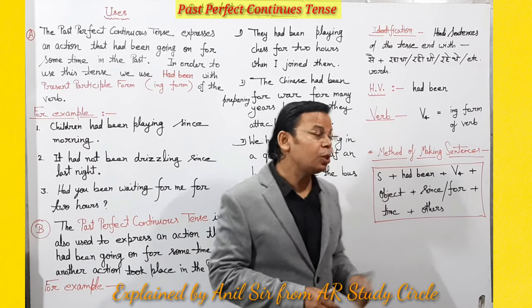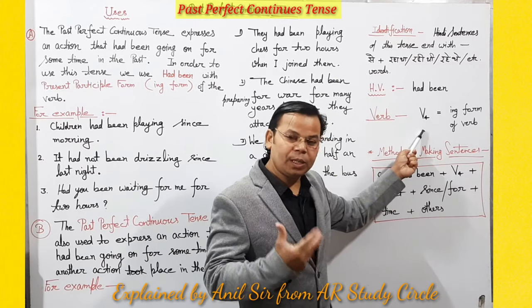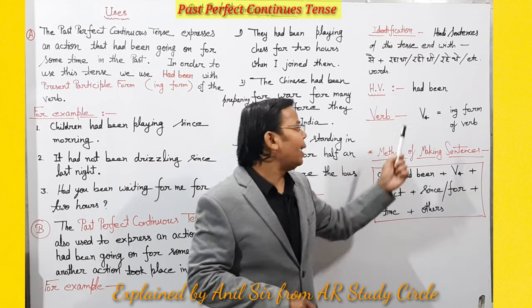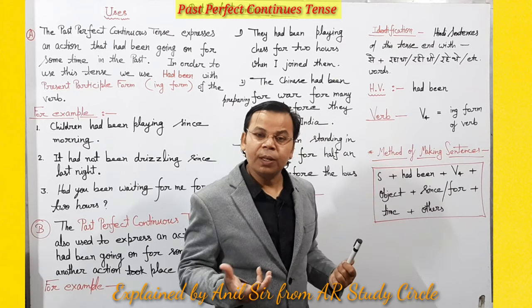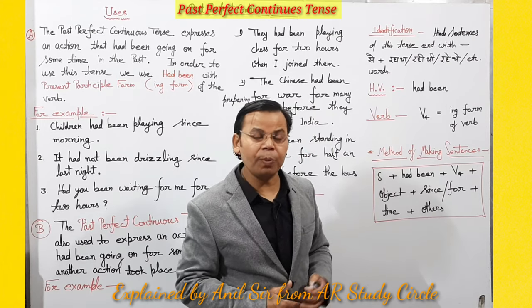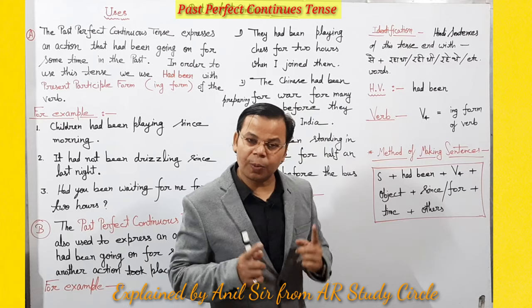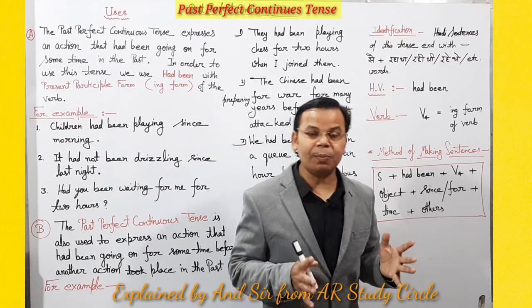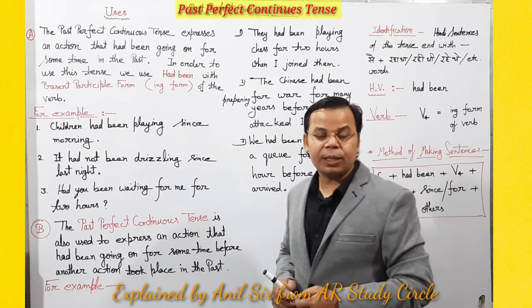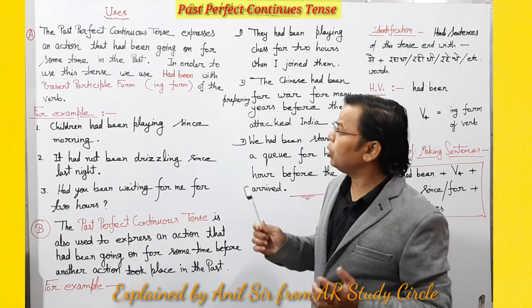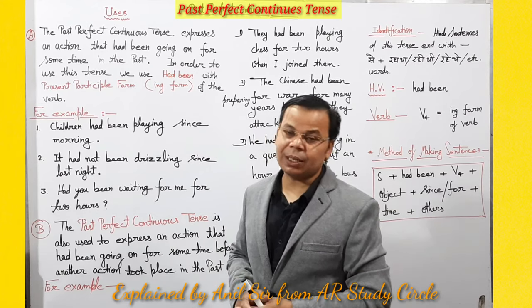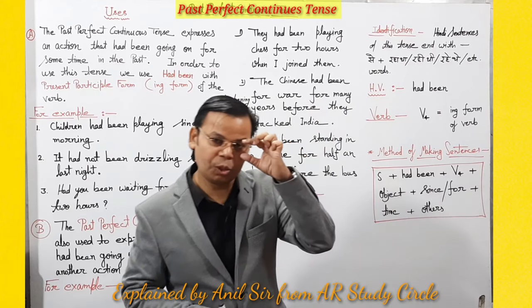In Past Perfect Continuous Tense, the fourth form of verb is used. The fourth form of verb is the 'ing form', also called the present participle. So present participle is used in this tense. Now I'm going to explain some uses and then tell you how to make sentences of Past Perfect Continuous Tense.